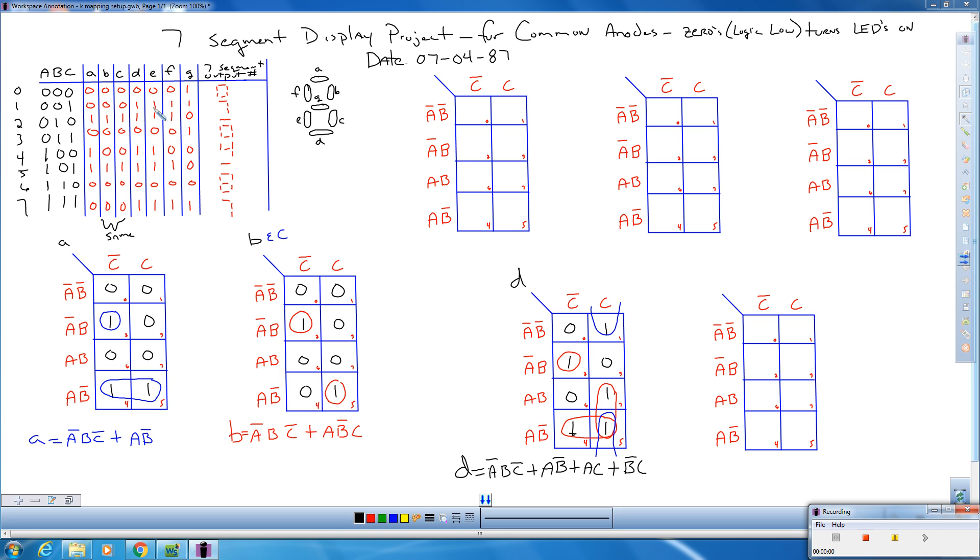D is 1, E is 1. D is 1, E is 1 here. D is 0, E is 0. Then we have 1, 1, 1, 1, 0, 0, 1, 1. Now there's no others over here that are the same, but D and E are also the same.